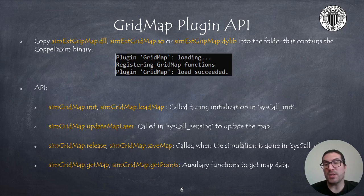After finishing the simulation, you must release the allocated memory by calling the release function at the sysCall_cleanup function of the CoppeliaSim script. Before that, we might be interested in saving the map using the saveMap function to use it for later use.